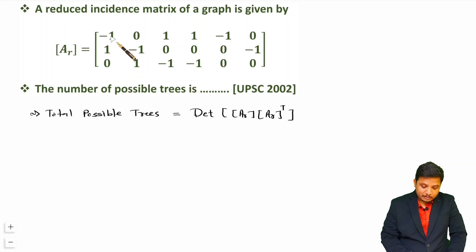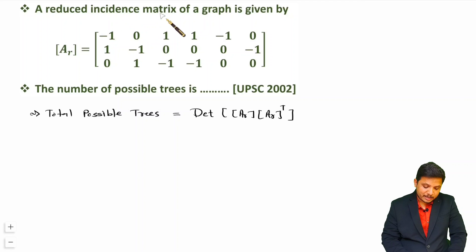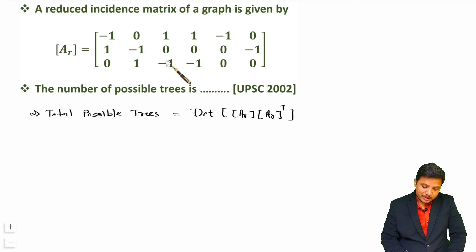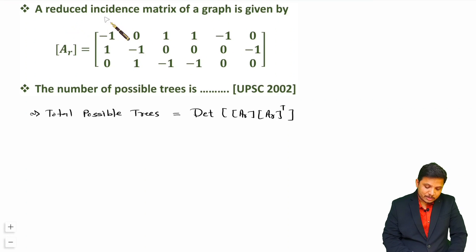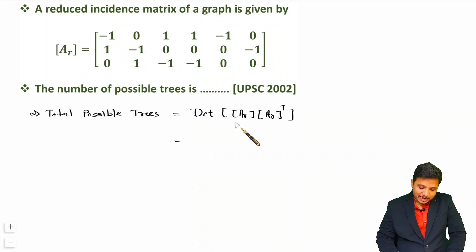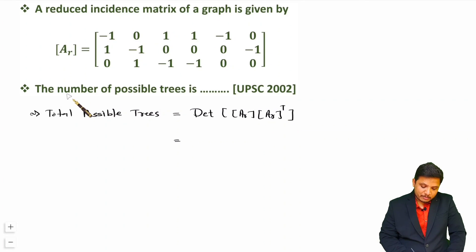In a reduced incident matrix, one row is removed from the full incident matrix. We can verify this because column-wise summation should be 0 for a full incident matrix — checking here each column confirms one row is missing, so this is indeed a reduced incident matrix. By calculating the determinant of Ar times Ar transpose, we can identify the possible number of trees.